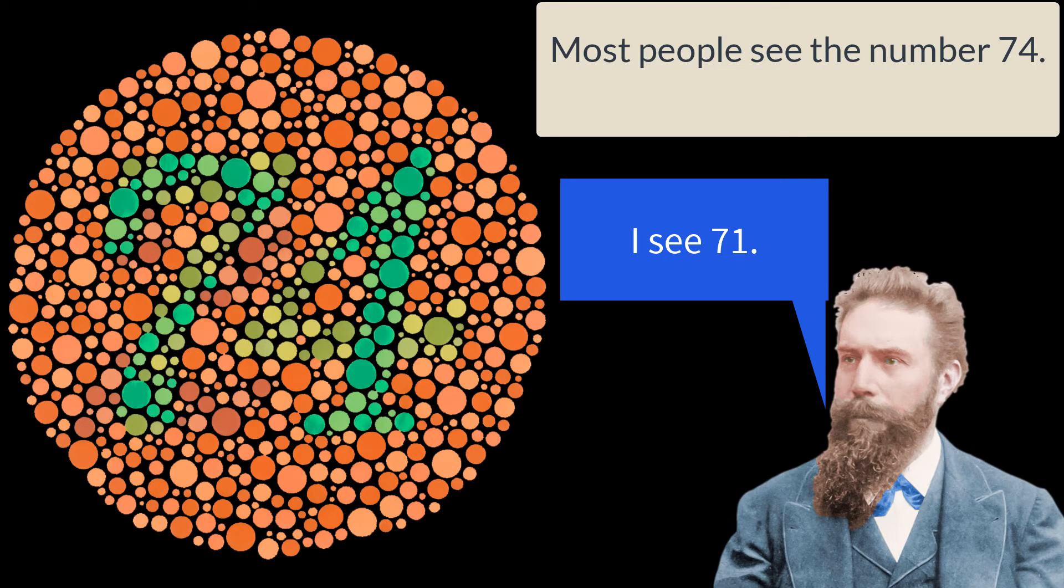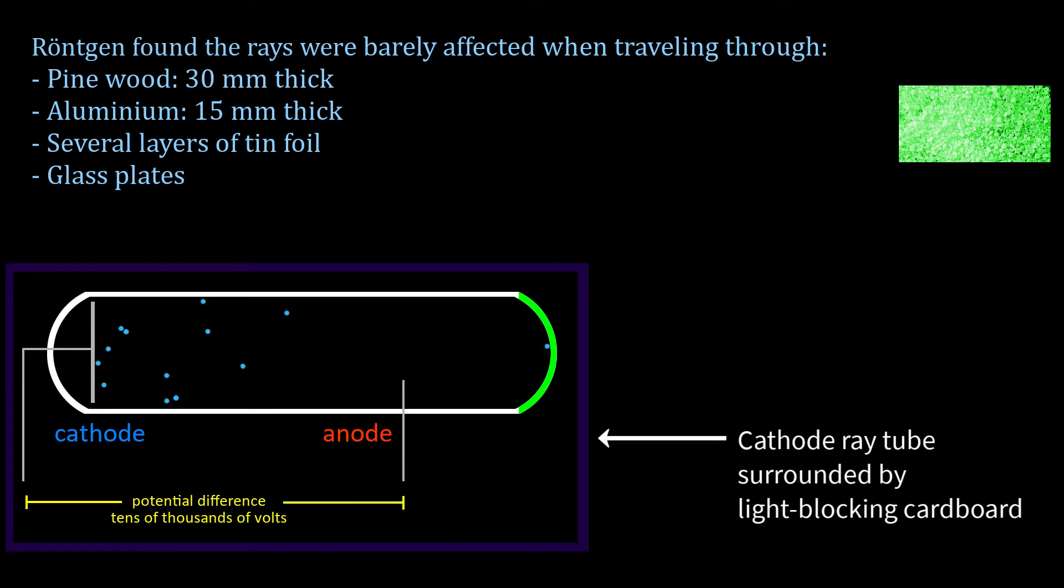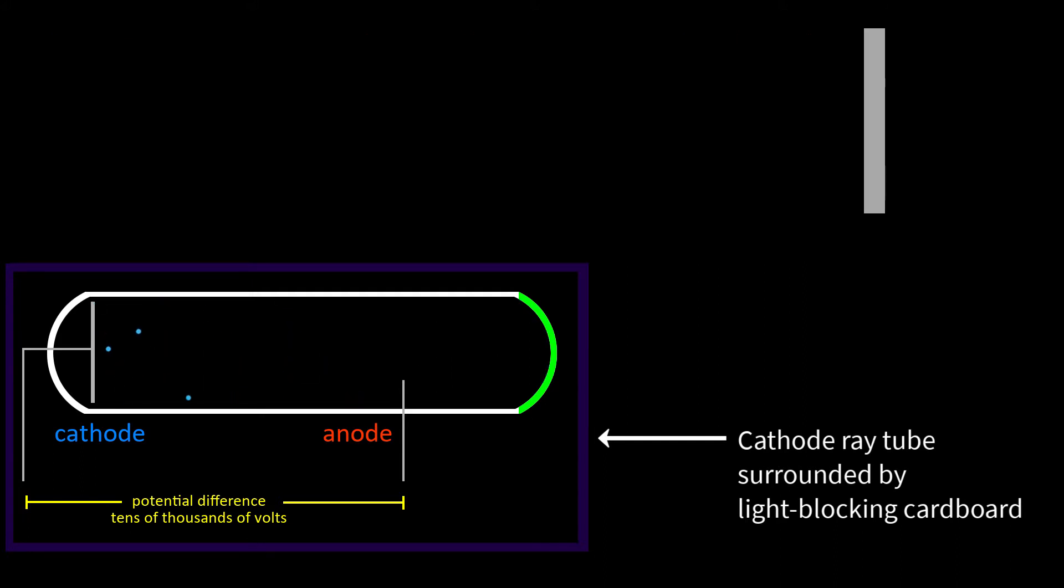He put things like books between the cathode ray tube and the screen, but the screen went on glowing. Röntgen found his rays could travel through all sorts of materials with only minor lessening of their intensity. The rays could be blocked using dense metals like lead and platinum. 1.5mm of lead blocked nearly all the rays.